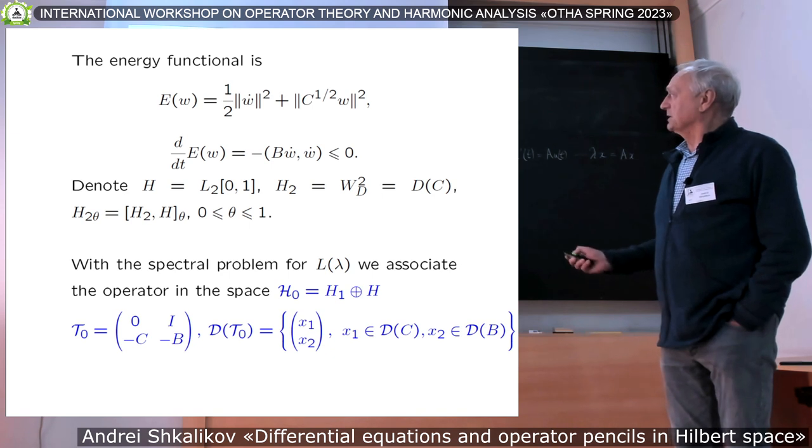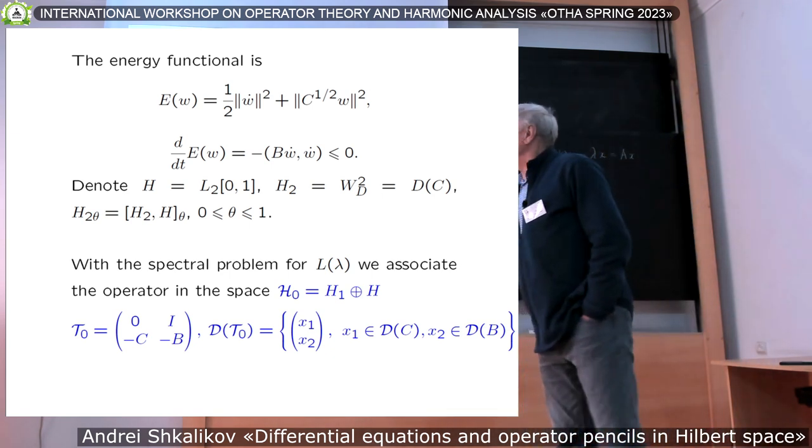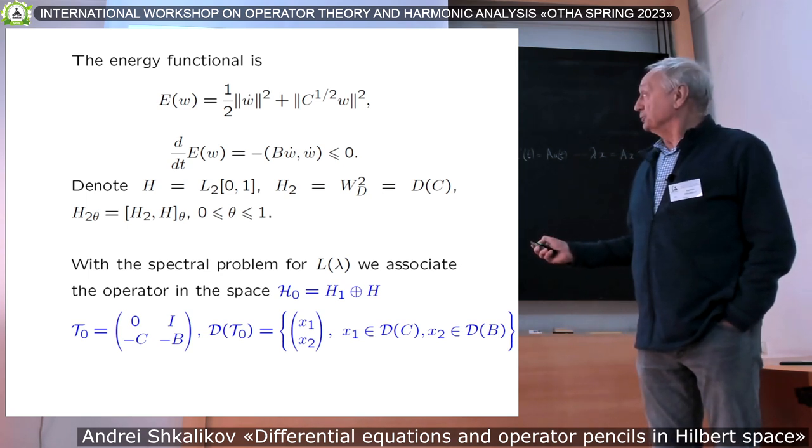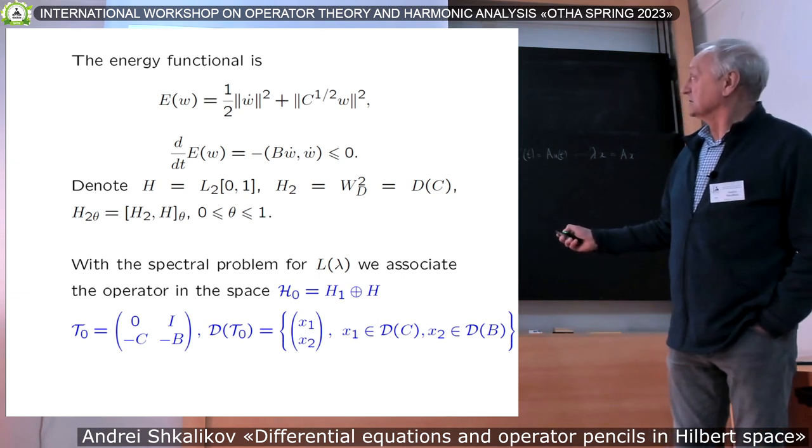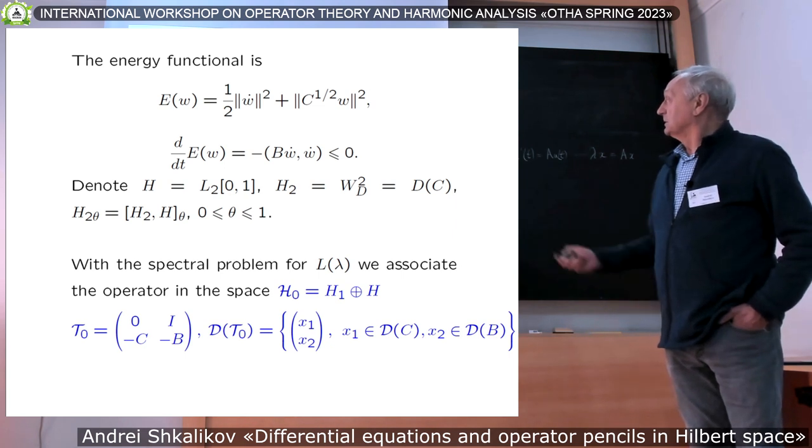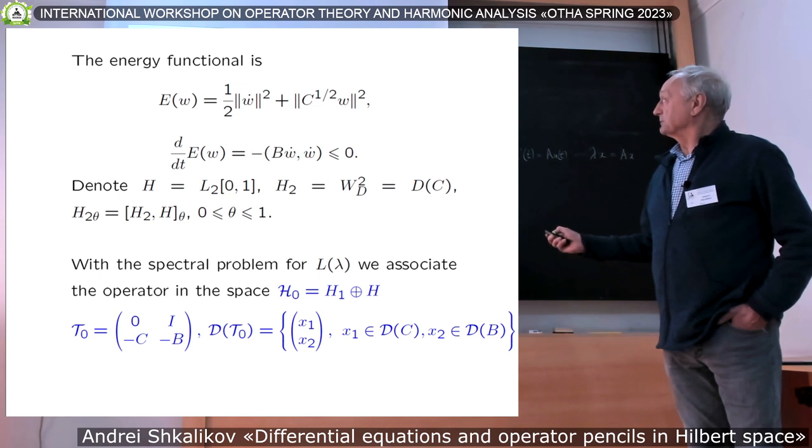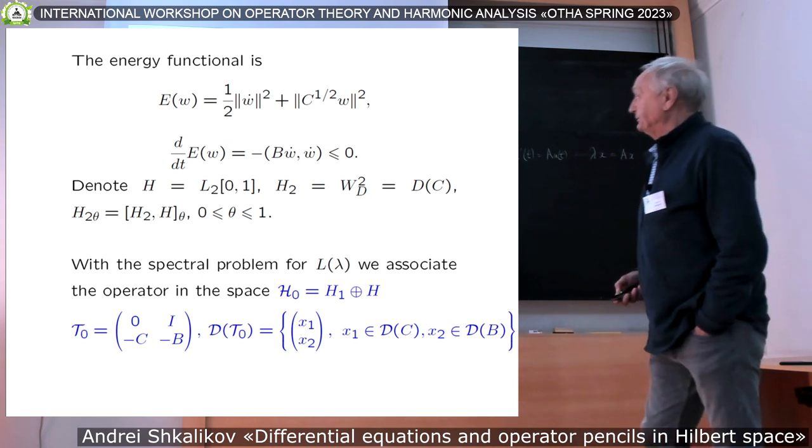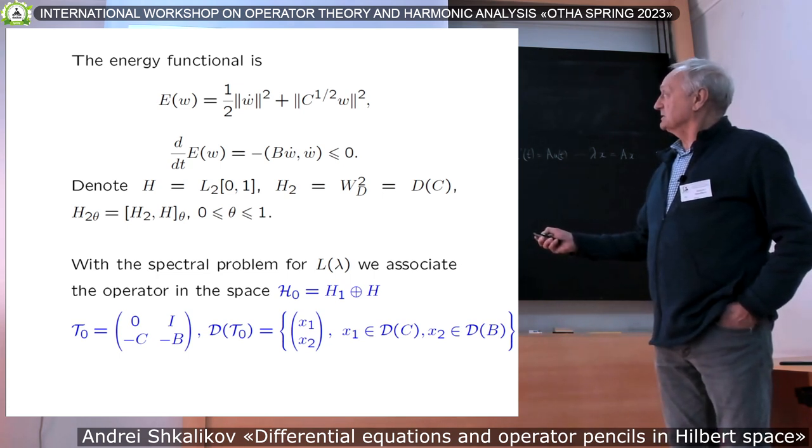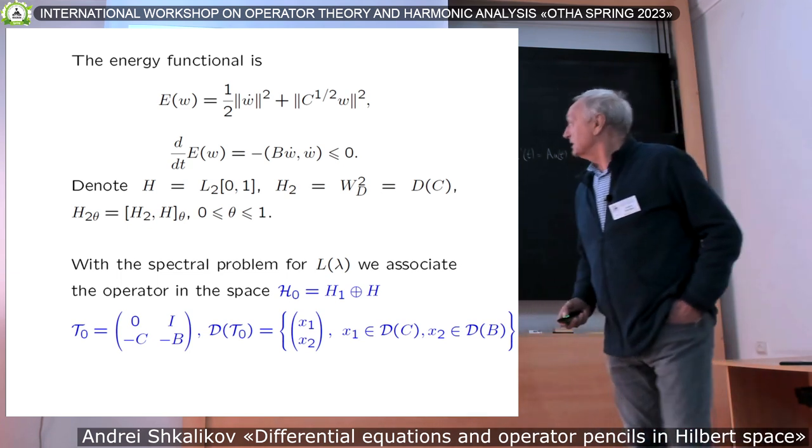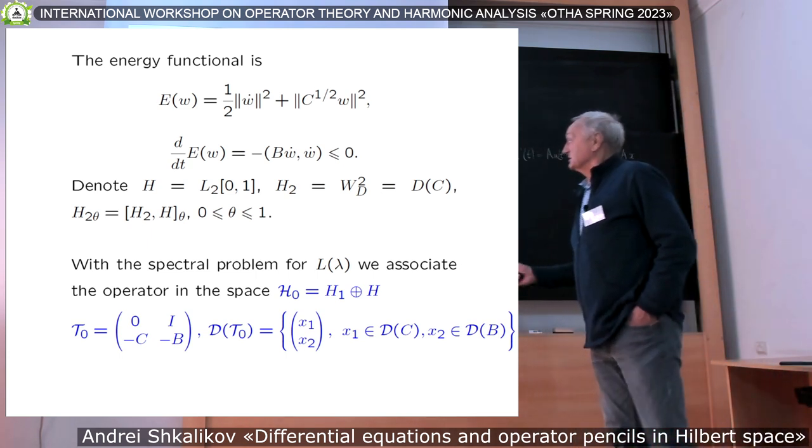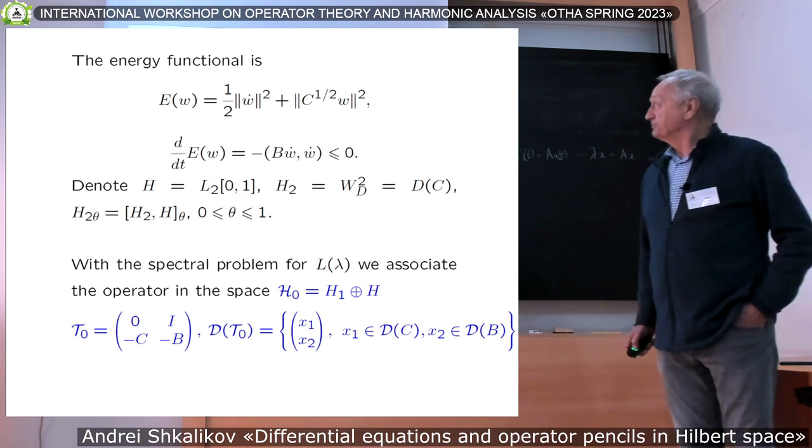To consider this problem in abstract form, let me introduce interpolation spaces. The original space H is usual L2. H2 with subscript D means Sobolev space W_2^2 with Dirichlet boundary conditions. This is very good space, and this is the domain of definition of the Sturm-Liouville operator which I pointed out before. Interpolation spaces are defined for theta between zero and one.